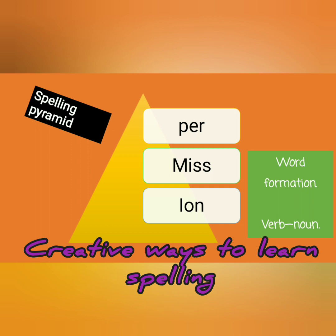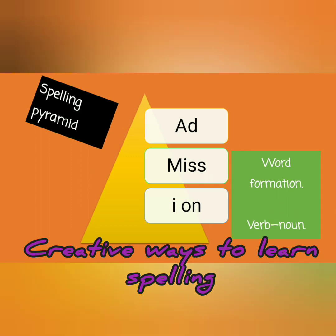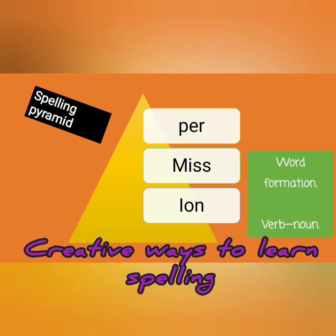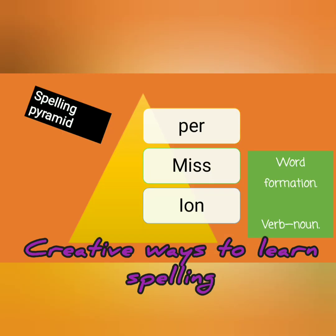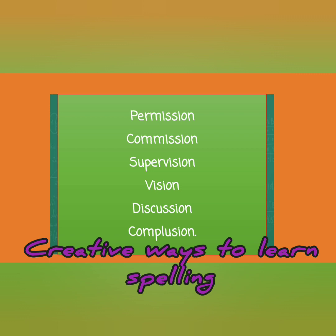Again, there is a spelling pyramid image before you: 'per', 'miss', and 'sion' — and you get the word 'permission'. Again, both these words are noun forms and come under vocabulary-based questions on word formation. Now here is a list of words: permission, commission, supervision, vision, discussion, compulsion. You can learn the spellings of these words by splitting them into two or three parts using the spelling pyramid.